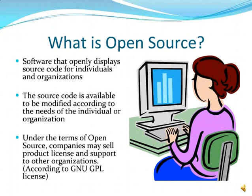Now we're going to define what open source software is. Open source software is software that openly displays source code for individuals and organizations. The source code is available to be modified according to the needs of the individual or organization. Under the terms of open source, companies may sell product licenses and support to other organizations according to the GNU GPL license — that's General Public License.